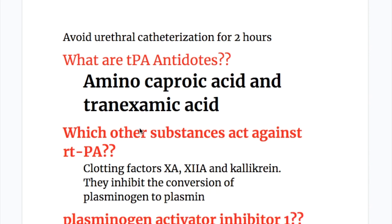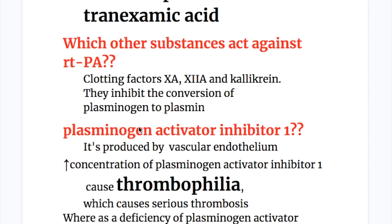What are the tissue plasminogen activator antidotes? The antidotes are aminocaproic acid and tranexamic acid. Other substances that act against rTPA include clotting factors activated factor 10a and activated factor 12a, and kallikrein. These inhibit the conversion of plasminogen to plasmin.